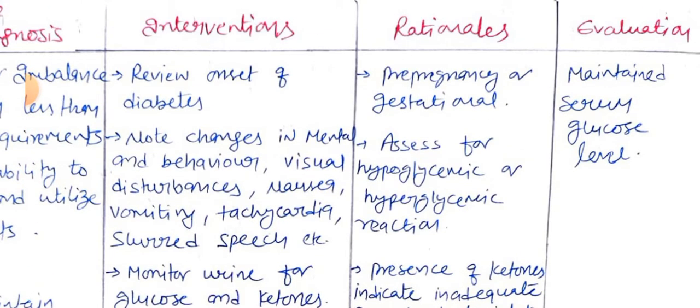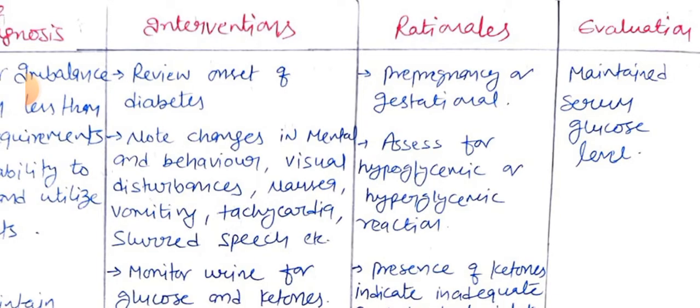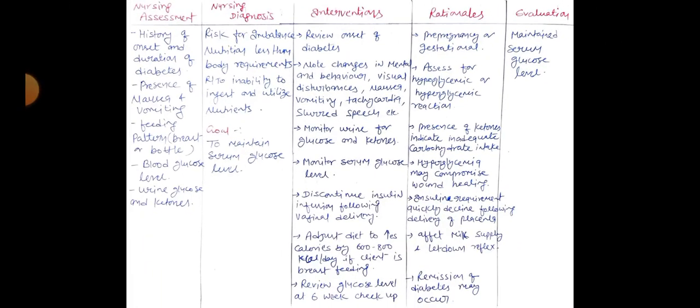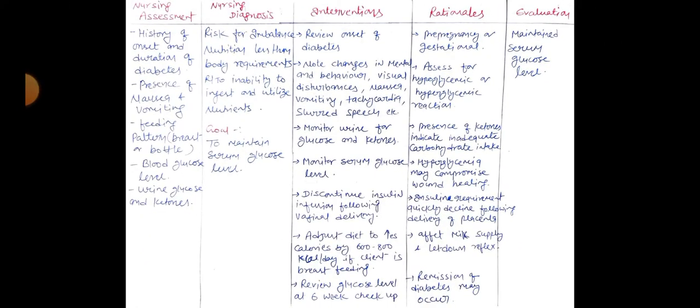Evaluation for diagnosis one: the patient has maintained serum glucose level. Next, we take nursing diagnosis number two.